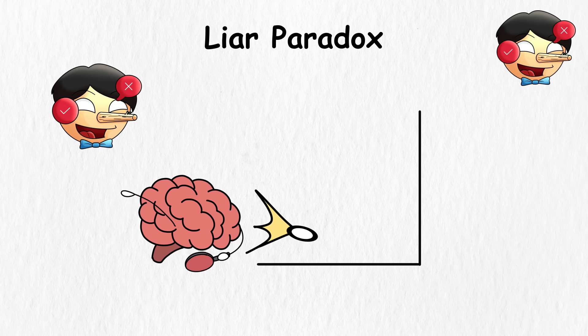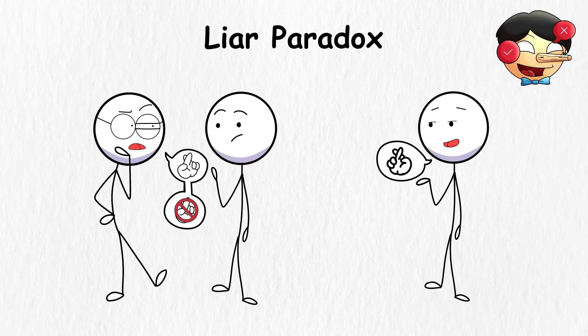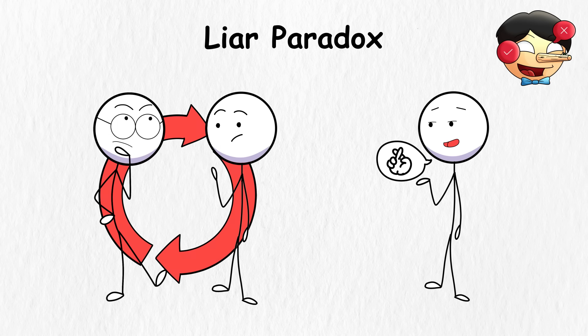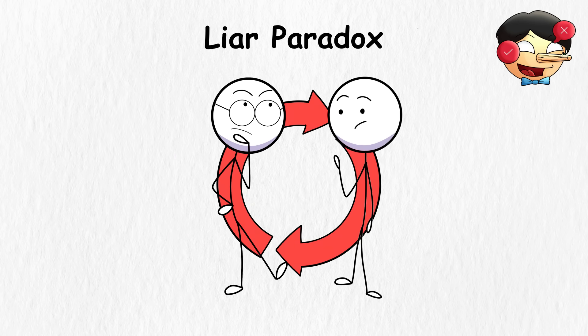The liar paradox creates a logical loop. Suppose the statement 'this statement is false' is true. Then that must mean it is false. But if it's false, then it's true. This is where the loop happens, as it never stops being a question of whether it's true or false. You're now basically in an endless debate with yourself.